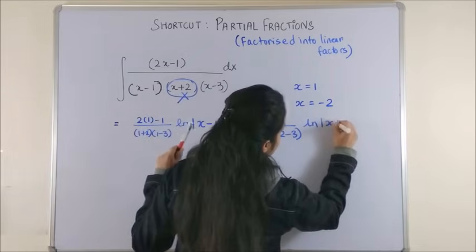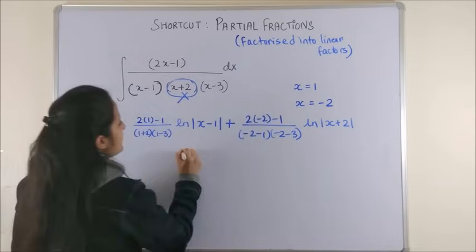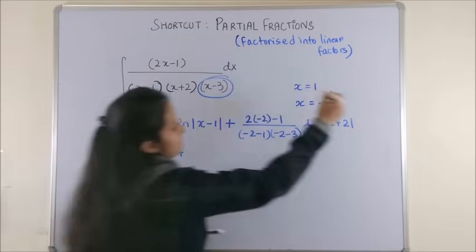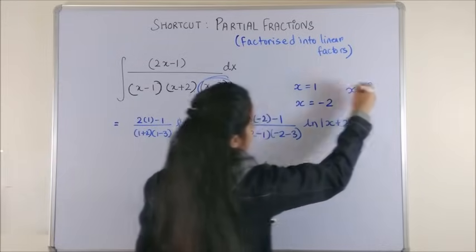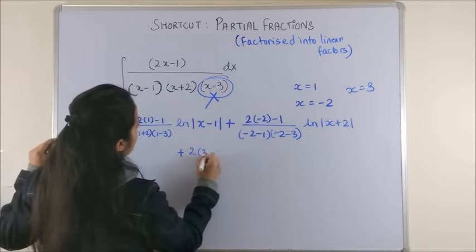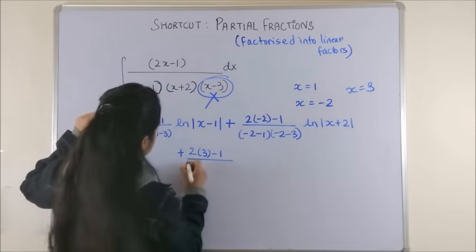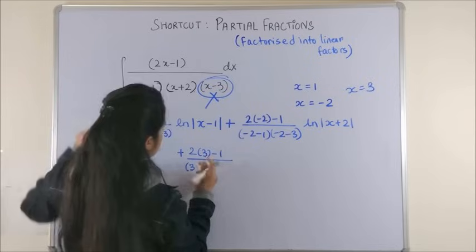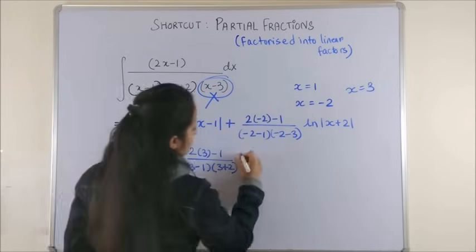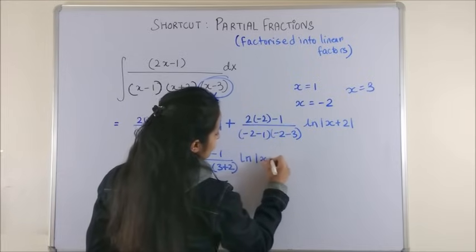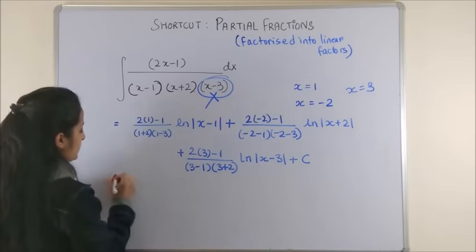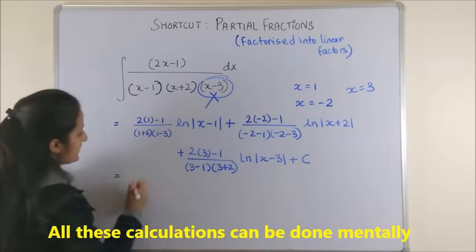Similarly for the third one, once again you put x minus three equal to zero, that gives you the factor x equal to three. Barring this, for x equal to three everywhere else, and log of the factor which we had just cancelled, plus c.